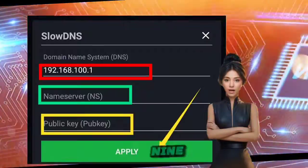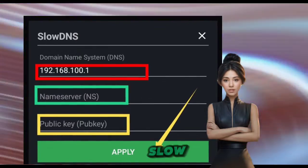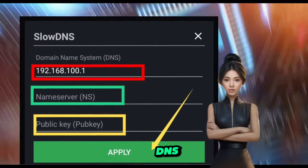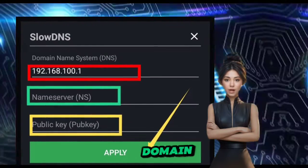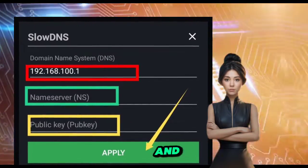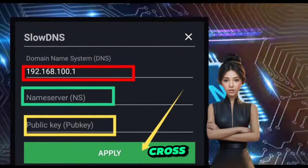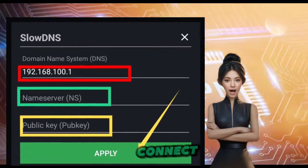Step 9. In the slow DNS setting, enter the DNS server, slow DNS domain, and public key. Dot your I's and cross your T's — we're almost ready to connect.